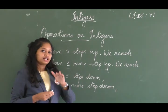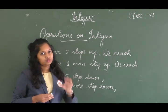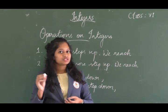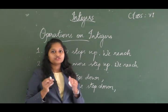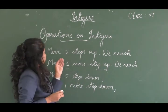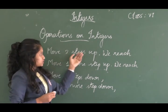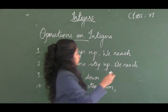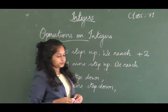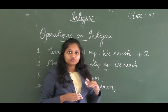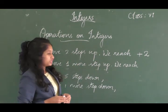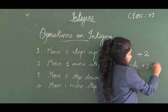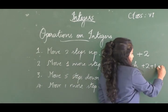Integers are a collection of positive numbers, negative numbers, and zero. If a person stands at position zero and moves two steps up, they reach plus 2. Moving one more step up gives plus 2 plus 1, which equals plus 3.